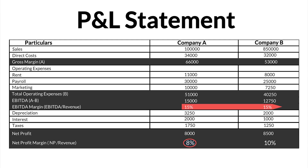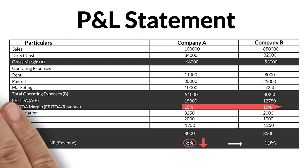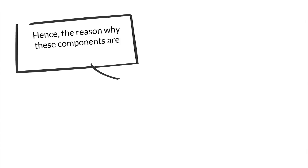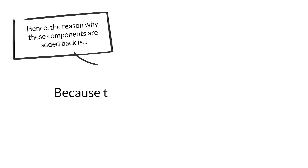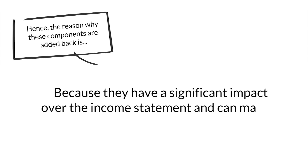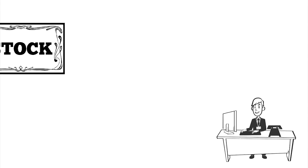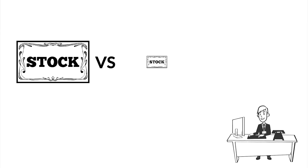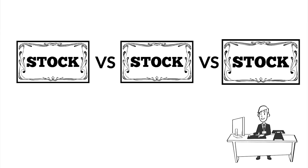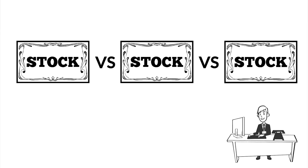The net profit margin of company A saw a drop of 2% against company B. Hence, the reason why these components are added back is because they have a significant impact over the income statement and can make it look more or less profitable. By adding them back, we create a level playing ground, making it better to analyze different stocks for comparative purposes.